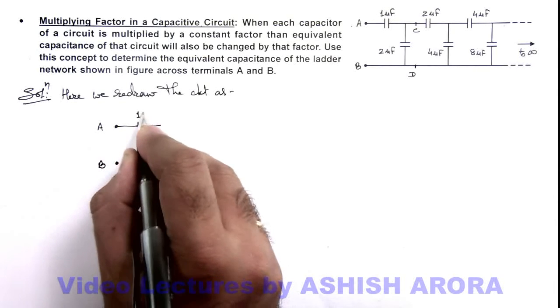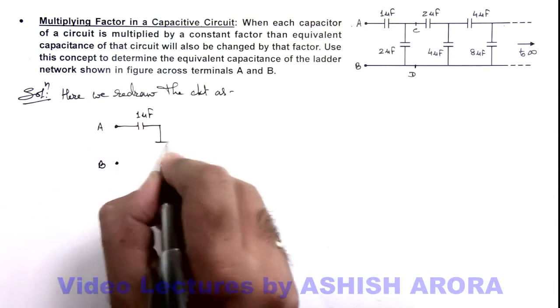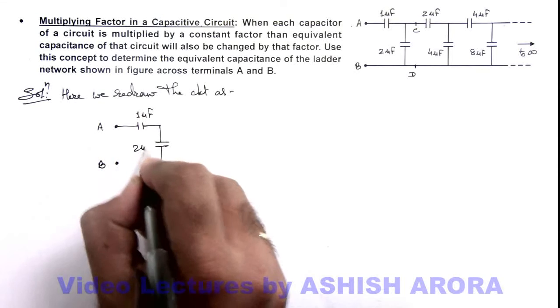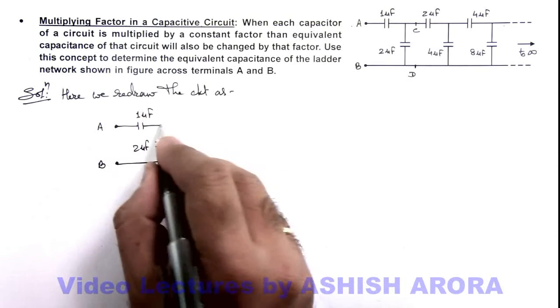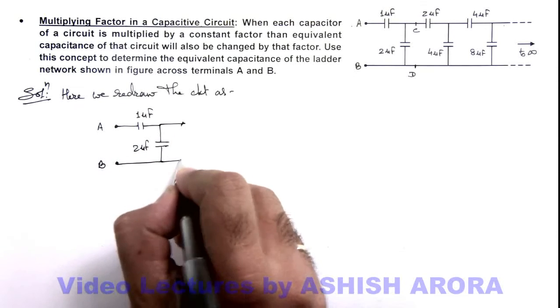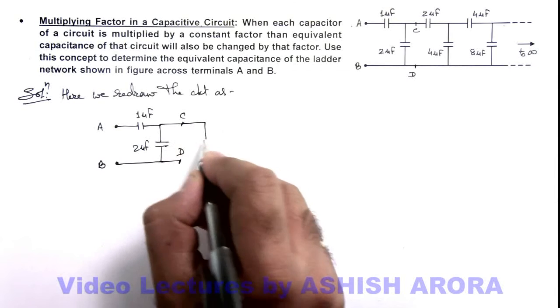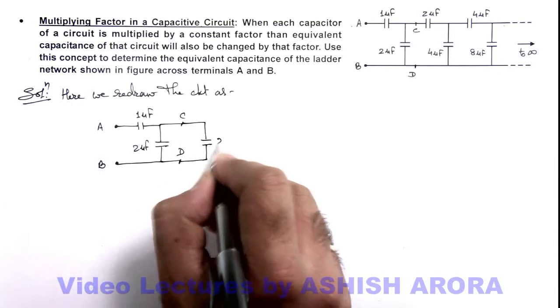The first section remains the same, that of 1 microfarad and 2 microfarad capacitors. And across C and D, I can replace the whole capacitance by 2C_not.